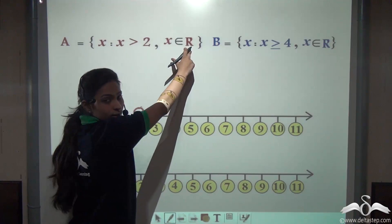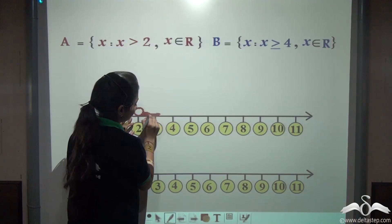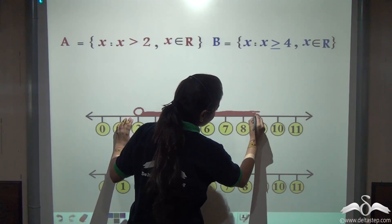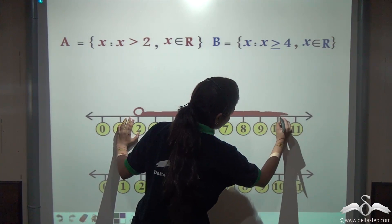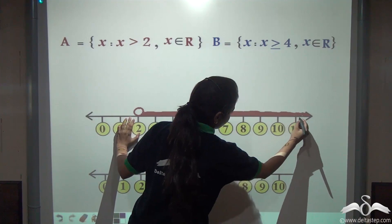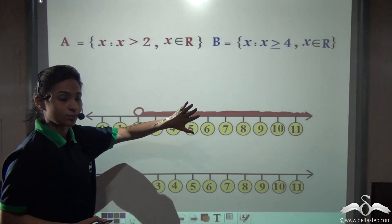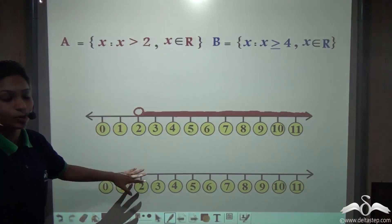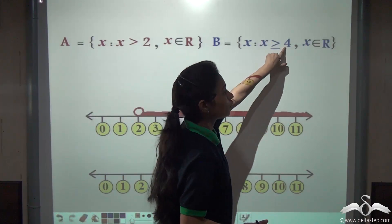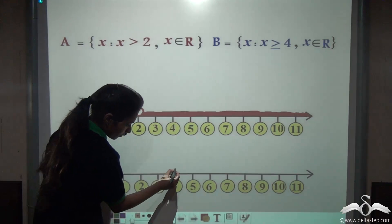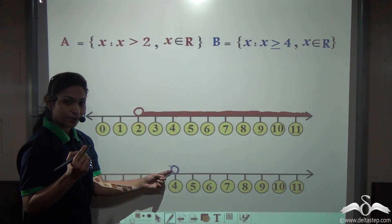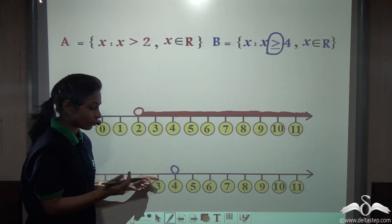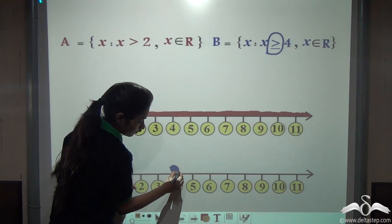Since x is greater than 2 and x belongs to real numbers, this can go on till infinity, so we shade this part. We are shading because x belongs to real numbers. If it were integers or natural numbers, we would just put dots on those numbers. Similarly, plot this for B: x is greater than or equal to 4 and x belongs to real numbers. Locate 4 on your number line. I made an empty circle — will it remain empty? Look at the sign: equal to is also given, so x can be greater than 4 or equal to 4. Fill this circle and shade the other part.